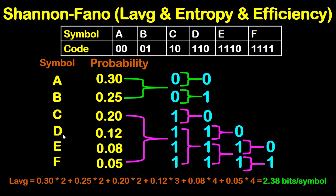Now 0.12, which is for D, by length of code, which is 3. Now for E, 0.08, by length, which is 4. Now for F, 0.05 by length of code, which is 4. I will multiply by 4, and the result will be 2.38 bits per symbol. So this is the L average.